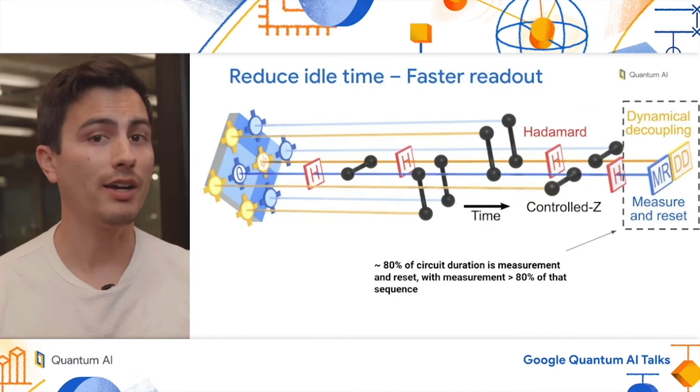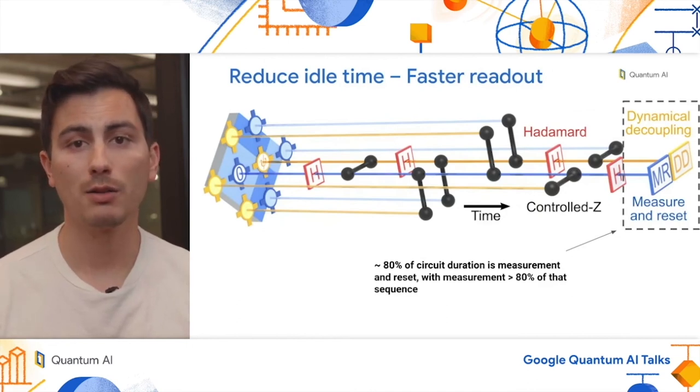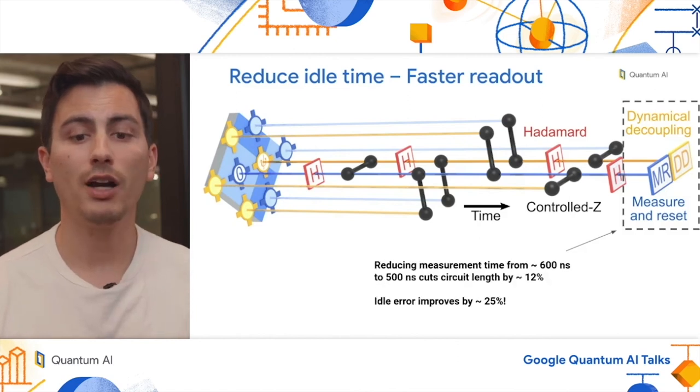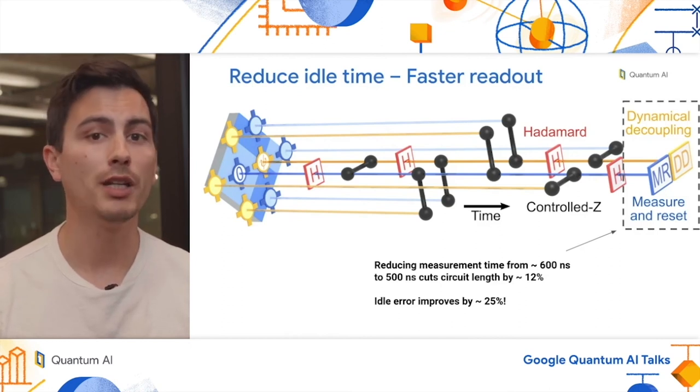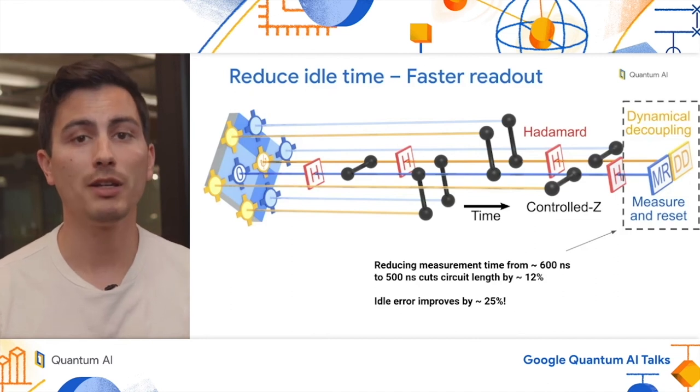In order to reduce the idle time, we actually made a key observation that readout comprises most of the time that we spend doing error correction. In particular, readout takes about 60% of the total circuit length. So to reduce the idle time, we actually sped up measurement from 600 nanoseconds to 500 nanoseconds, and this improved our idle error by around 25%. Now importantly, due to our new calibration and system optimization protocols, we're able to do this speed up without reducing the measurement performance.